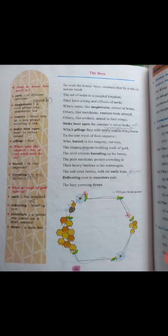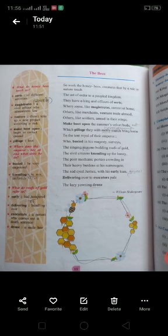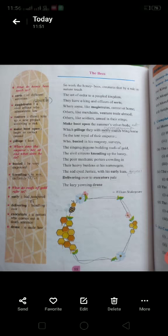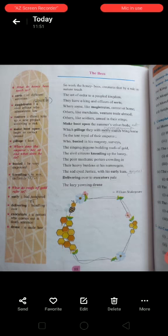See the meanings. Busy bee, very engrossed. Kneading, to mix uniformly. Surly, bad tempered. Executors, a person who carries out a death sentence. And drone means male bee.